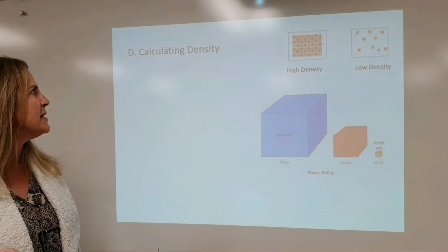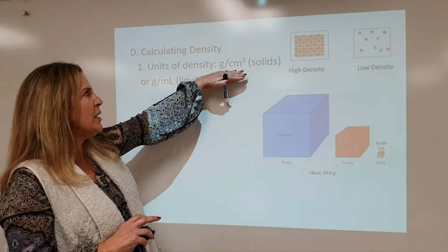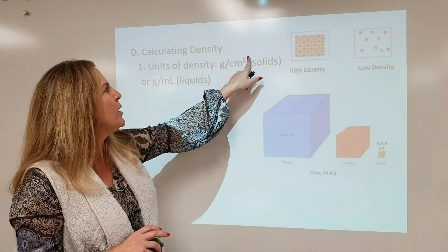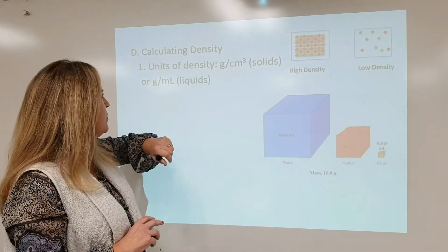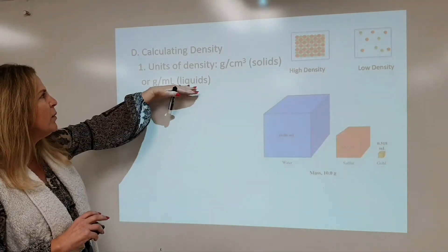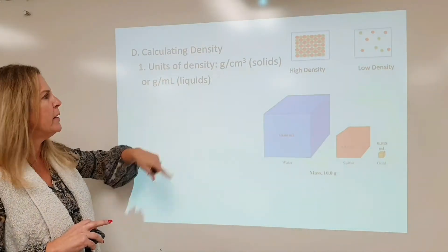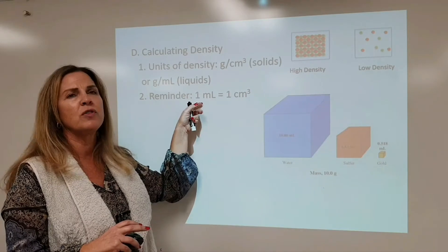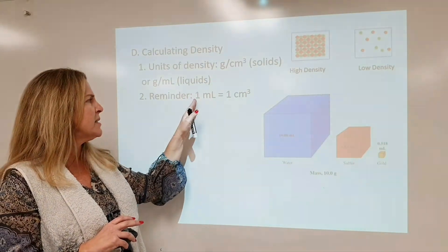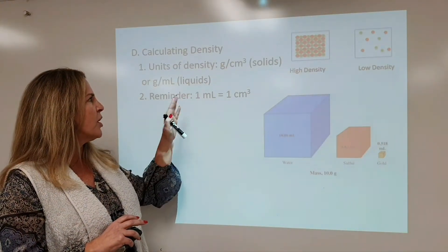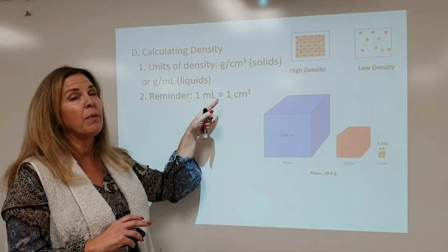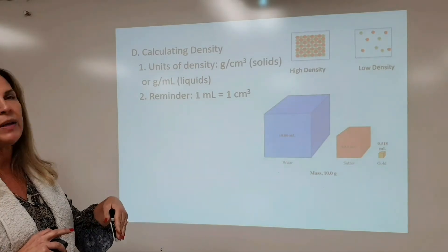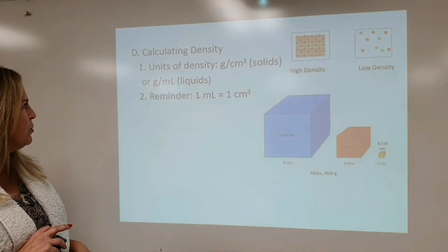Now we're going to start calculating density. Units of density: typically, if we are dealing with solid material, the units for density would be grams per centimeters cubed. If we're dealing with liquids, that's when you're going to see grams per milliliter. This is a very important conversion factor: one milliliter is equivalent to one centimeter cubed. So it makes it very easy to convert between milliliters and centimeters cubed.